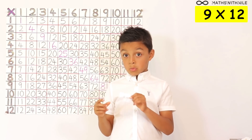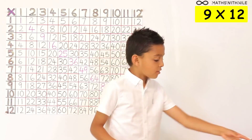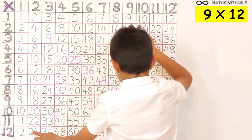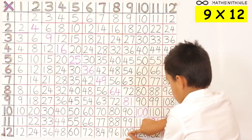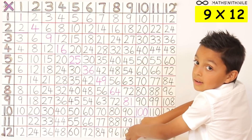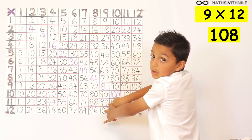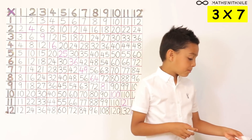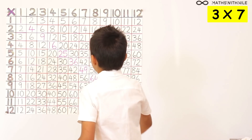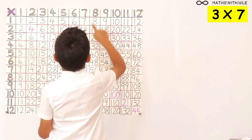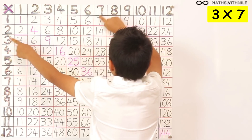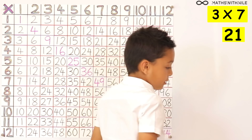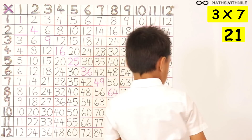9 times 12. So 9 times 12 is 108. Very good. Next question: 3 times 7. I'll go to my 7 column and my 3 row and then 21. So the answer to 3 times 7 is 21.